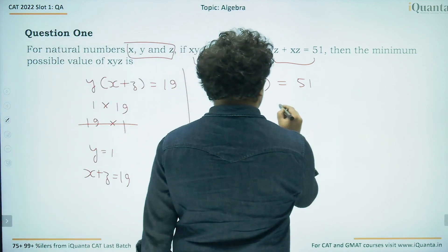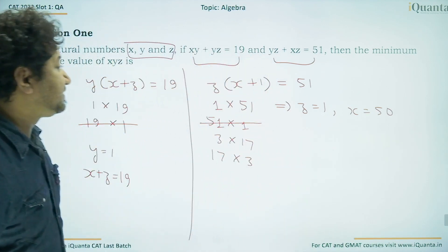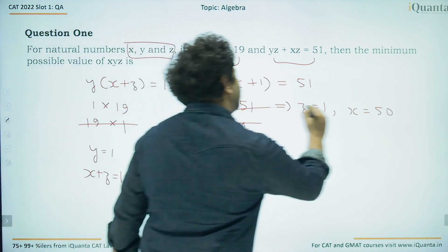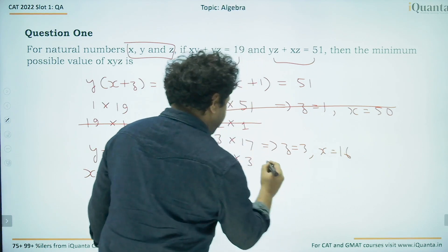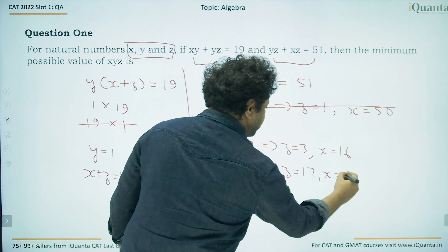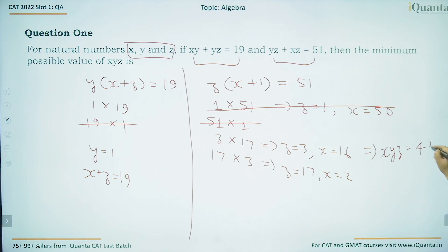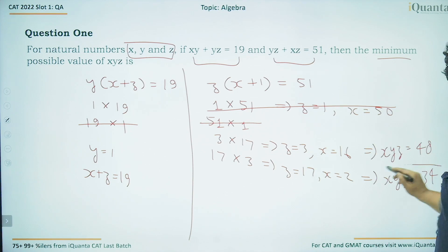When z = 1 and x + 1 = 51, then x = 50. But this is not possible because x + z must equal 19; x cannot be 50. For 3 × 17: z = 3 and x = 16. For 17 × 3: z = 17 and x = 2. So we have two valid possibilities. The product xyz in the first case is 16 × 1 × 3 = 48, and in the second case 2 × 1 × 17 = 34. The minimum value is 34.